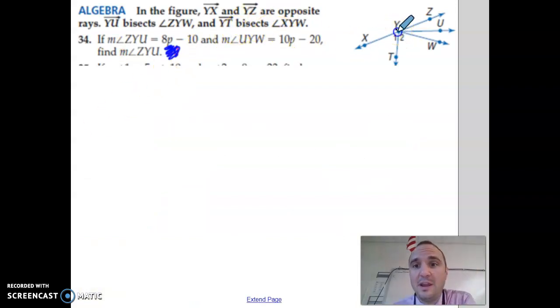Here, it says YT is an angle bisector. Here, that means it cuts angle X, Y, W in half. So this angle is congruent to this angle. Angle 1 and angle 2 are congruent.